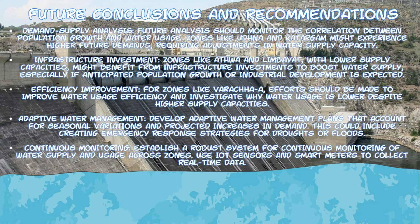To wrap things up, I wanted to provide some future conclusions about demand-supply analysis. Future analysis should closely monitor the correlations between population growth and water usage across different zones. Zones like Udhna and Katargam are projected to experience high future demand due to rapid population growth and urbanization, indicating a need for proactive adjustment in water supply capacities. Planners should regularly update population growth forecasts and integrate them into water demand models.